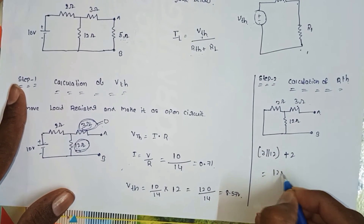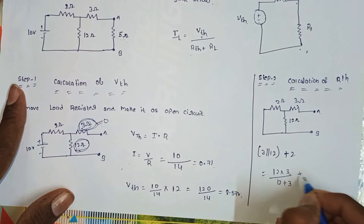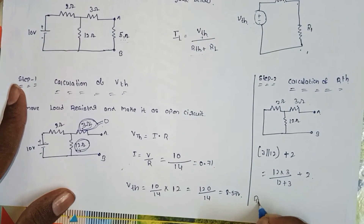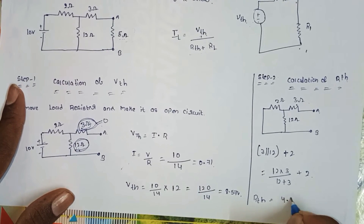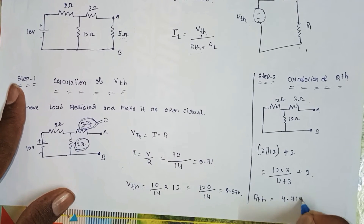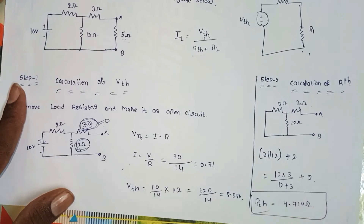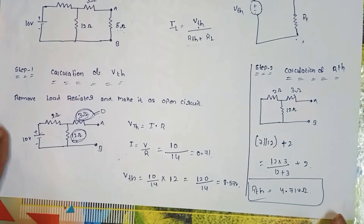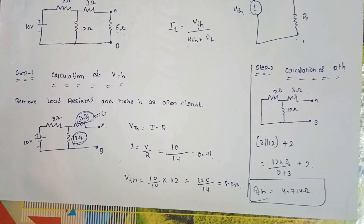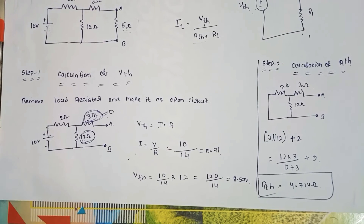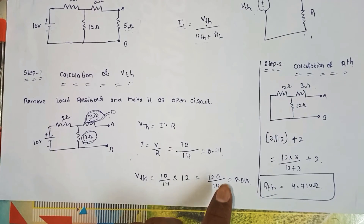The total RTH equals (12 times 3) divided by (12 plus 3), plus 2 ohms, giving a total RTH of 4.714 ohms. So RTH equals 4.714 ohms.